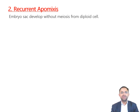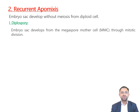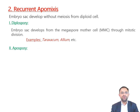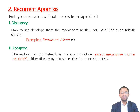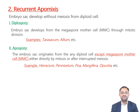The second type is recurrent apomixis. In recurrent apomixis, the embryo sac develops without meiosis from a diploid cell. It may be of three types. First is diplospory, where the embryo sac develops from the megaspore mother cell; found in Taraxacum and Allium. Second is apospory, where the embryo sac originates from any diploid cell except the megaspore mother cell, either directly by mitosis or after interrupted meiosis; found in Hieracium, Pennisetum, Poa, Mangifera, and Opuntia. Third is androgenesis, where the embryo sac originates from the generative nucleus of pollen tube cells.